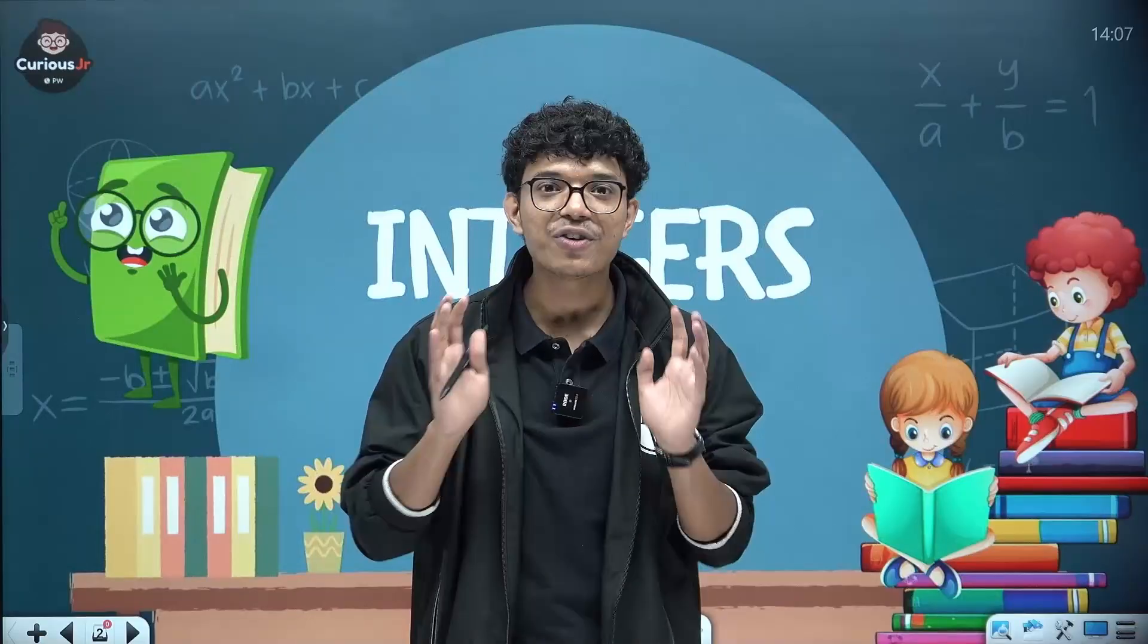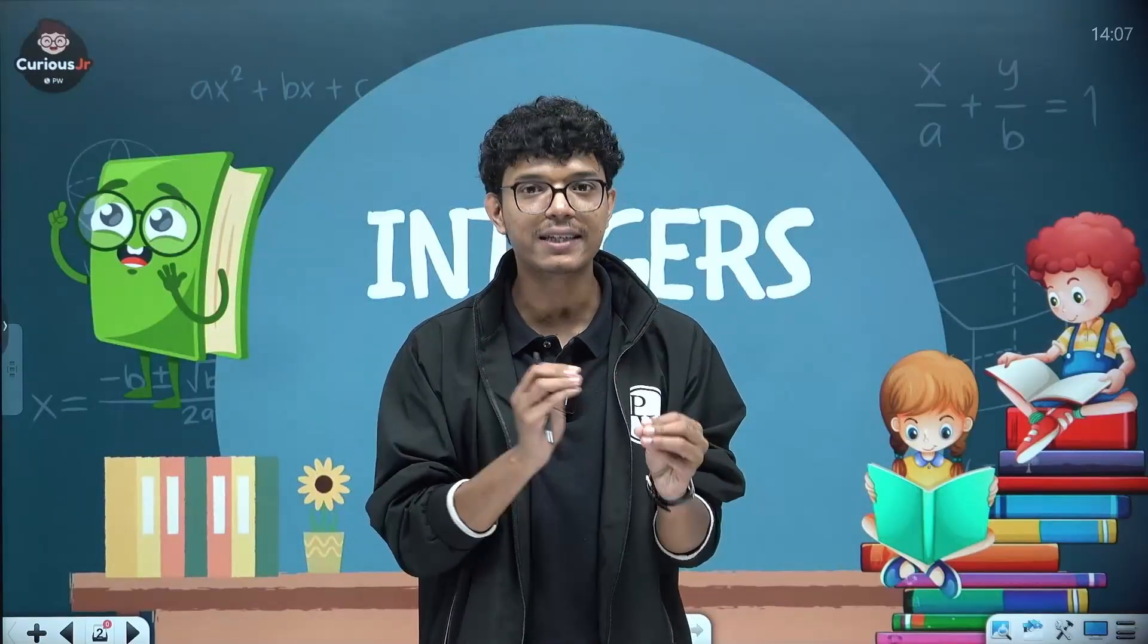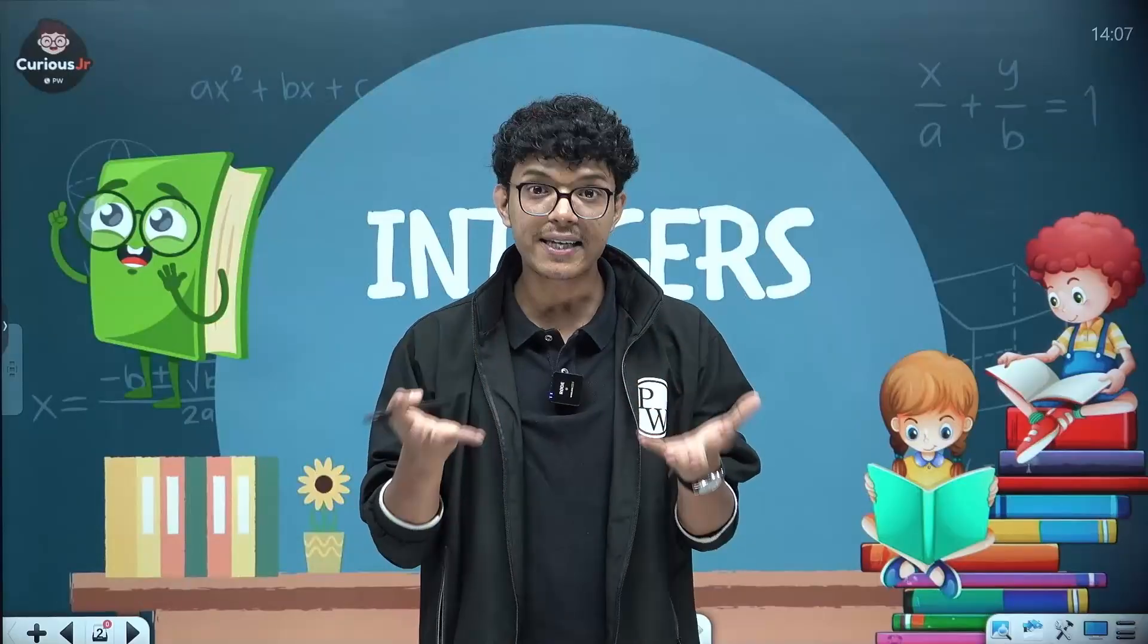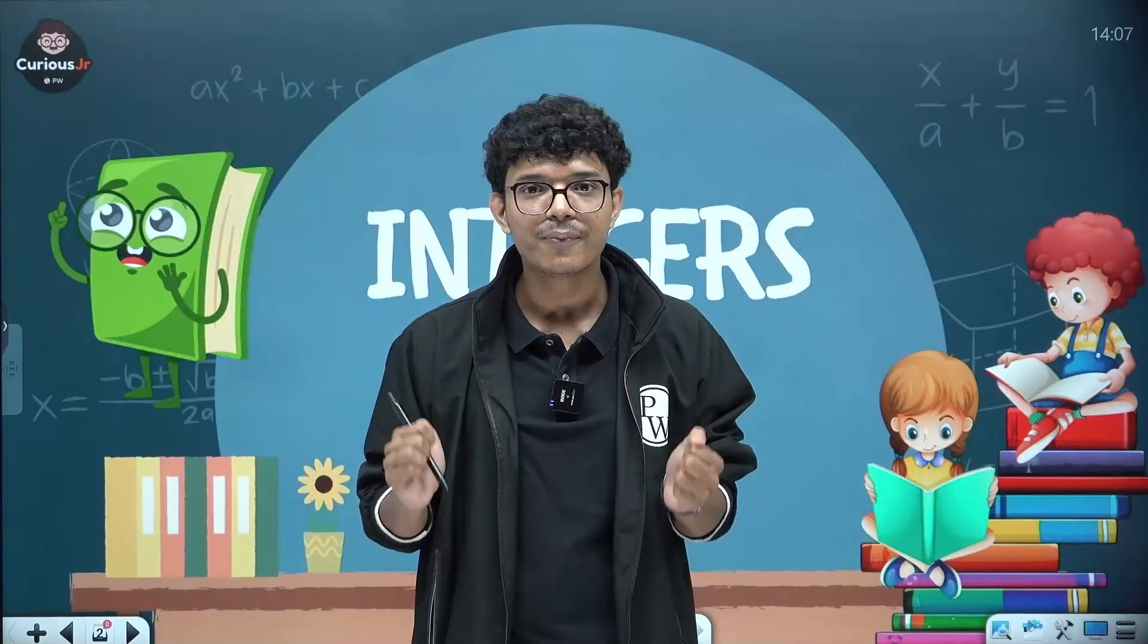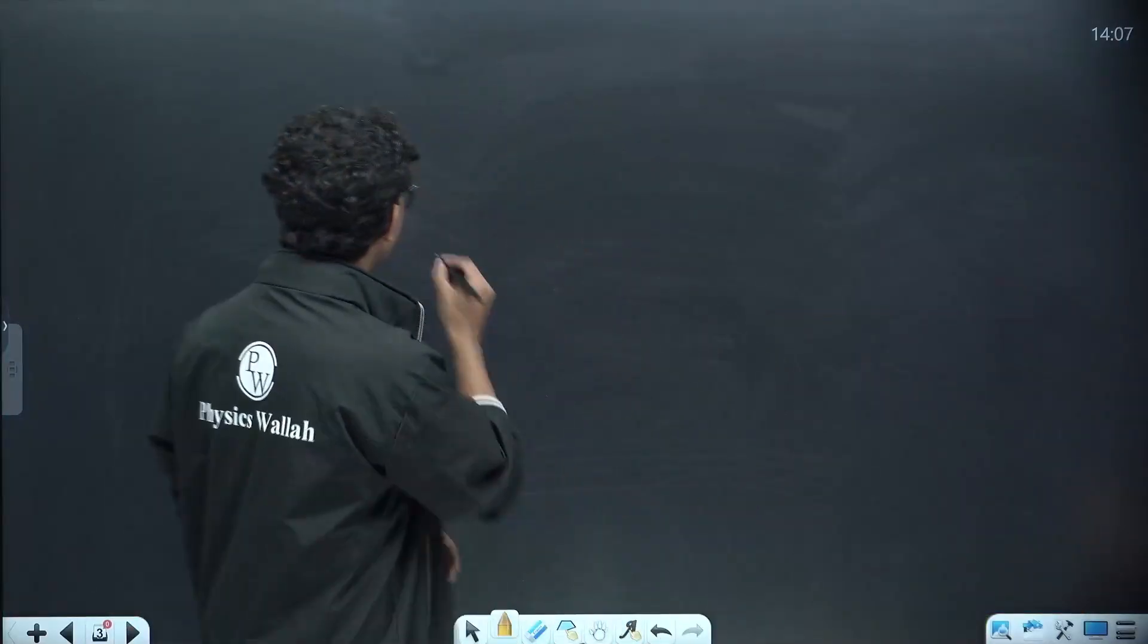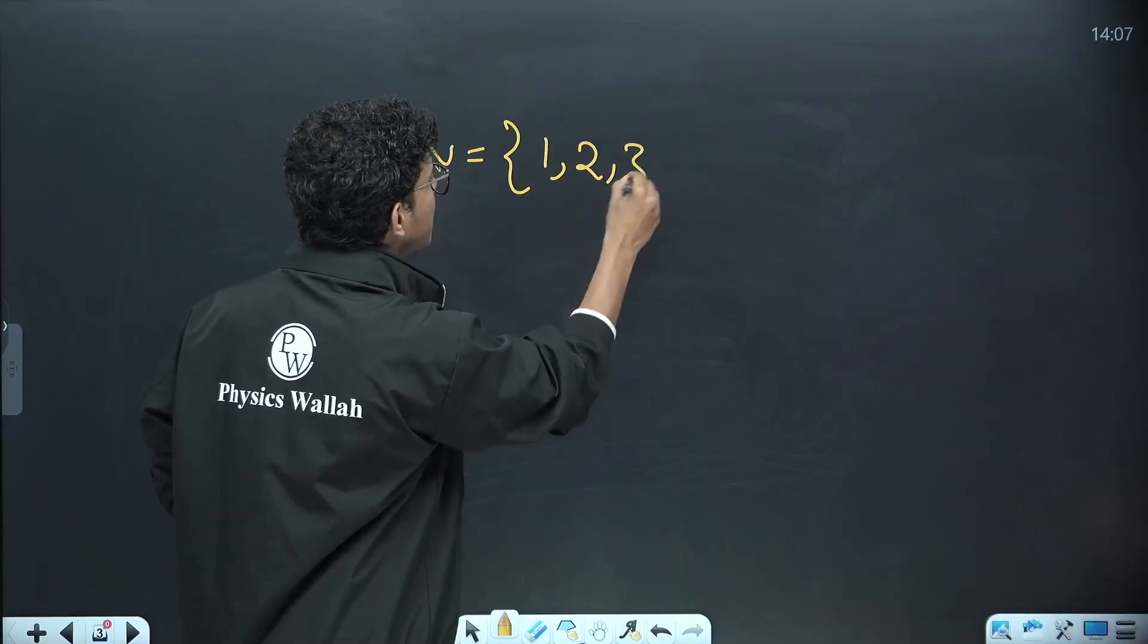Integers kya hote and why do we need integers we will understand. Before that let's quickly revisit the basics. The counting numbers like 1, 2, 3 etc are called natural numbers and which is represented by the letter N. N will be our natural numbers, that is our counting numbers.